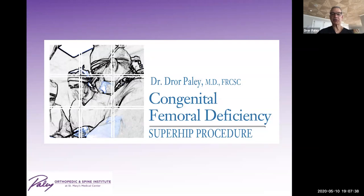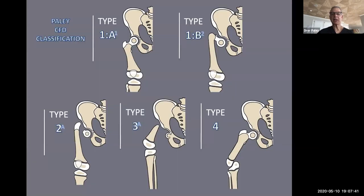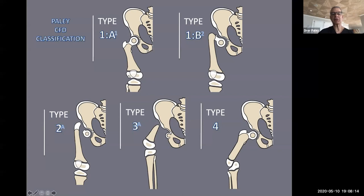We're going to talk about the Super Hip procedure, but first we need to back up and talk about the classification of CFD. Most of you are familiar with this four-part classification. Type 1, divided into A and B, has an intact femur with an ossific nucleus of a femoral head, a femoral neck which may or may not be ossified, greater trochanter, shaft, knee joint, distal epiphysis, and the patella is usually present.